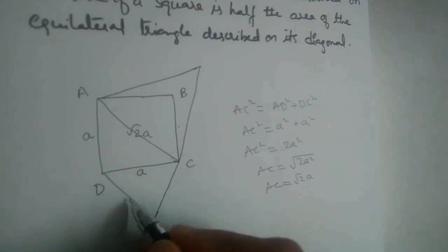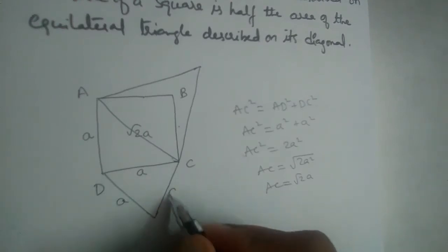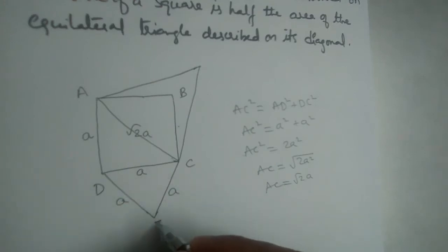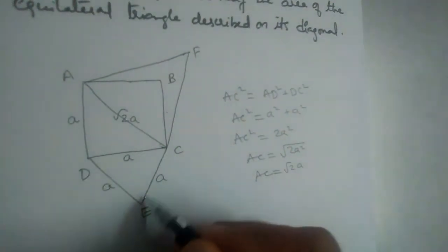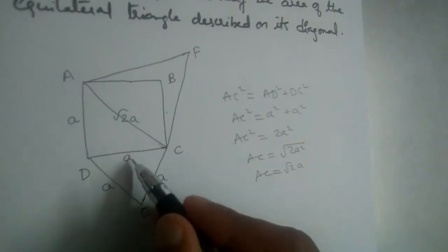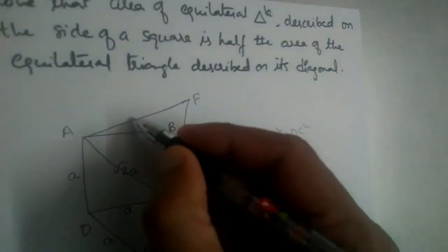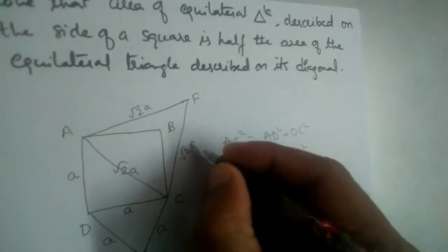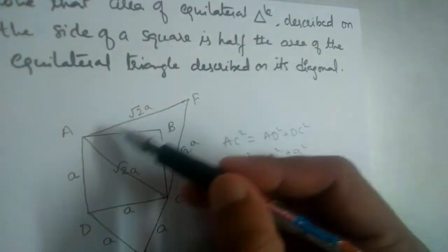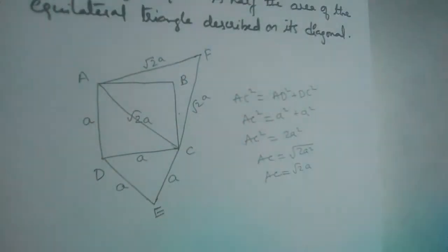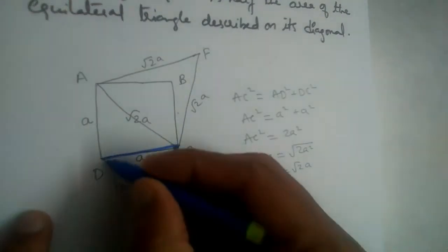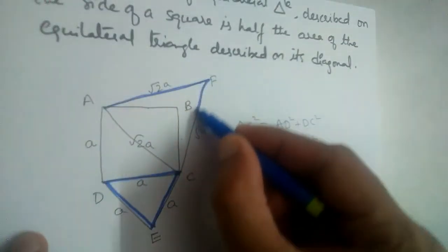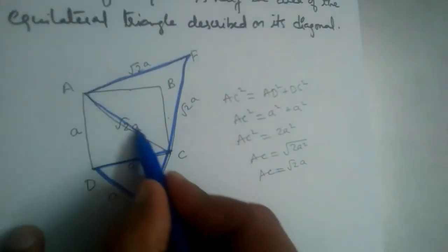Each side of the square is A. Let us name the apex of the equilateral triangle on side DC as E, and the apex of the equilateral triangle on the diagonal as F, so we have equilateral triangle DEC with each side A, and equilateral triangle AFC with each side √2·A. We should consider these two triangles.